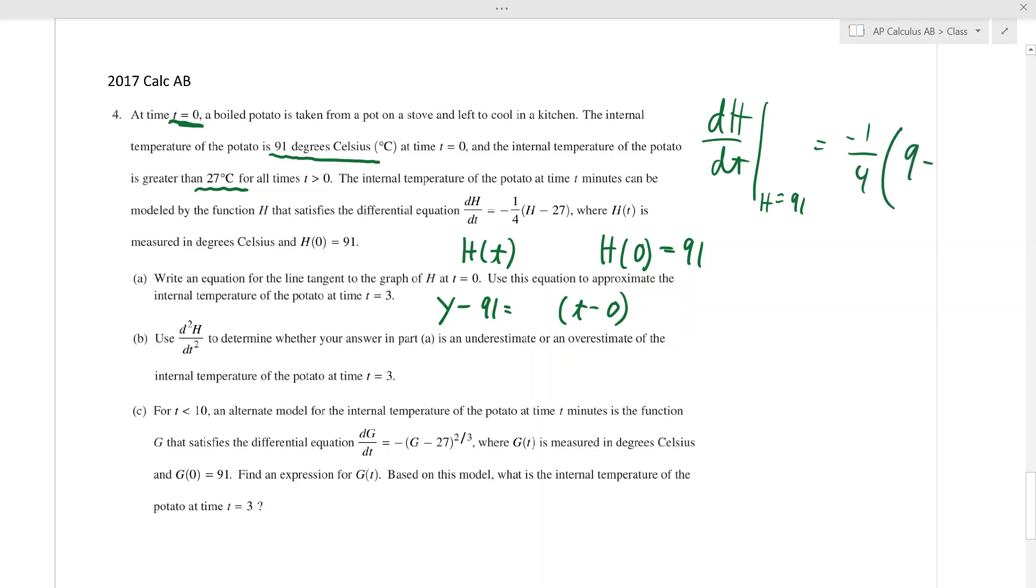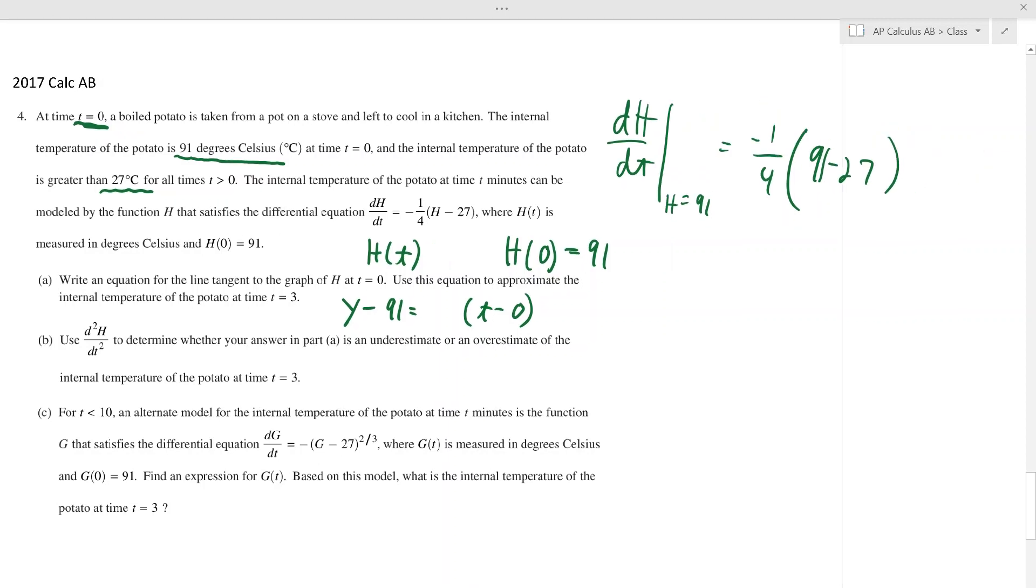So to find the derivative at time zero, which is really h equals 91, it's really negative a fourth times 91 minus 27. What's that going to be? 84, 64, negative 16. So that's the tangent line. That's all you have to do. Super easy question. Just got to pay attention to what variables are giving you here.